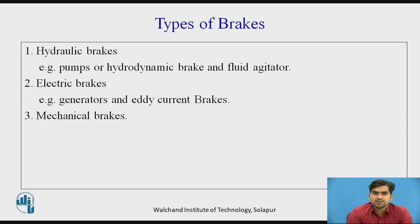The types of brake: the first one is the hydraulic brake. Hydraulic brakes we will observe in pump or hydrodynamic brake and fluid agents — generally hydraulic energy is used to stop the rotating system. The second type is electric brake, where examples include generators and AC current brake — electric energy is used for stopping the rotating system. The third one is mechanical brake, in which mechanical energy is used for stopping the rotating system. For example, our car brake is an example of a mechanical brake.